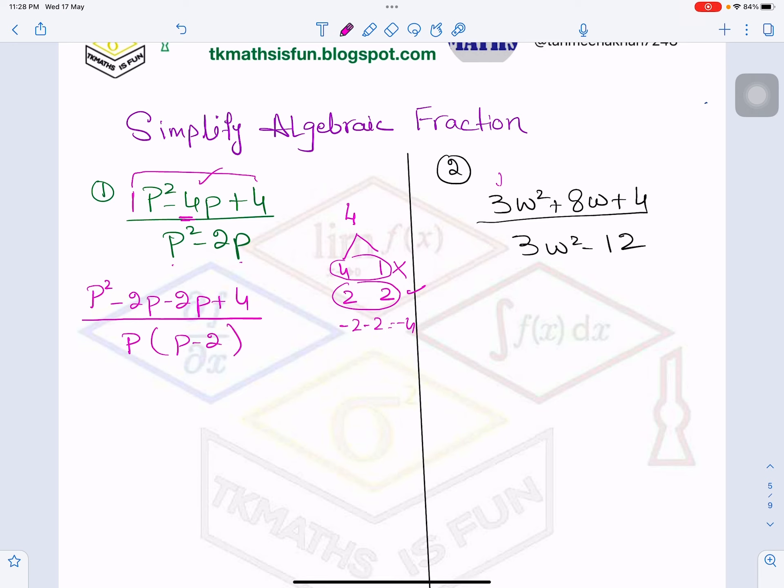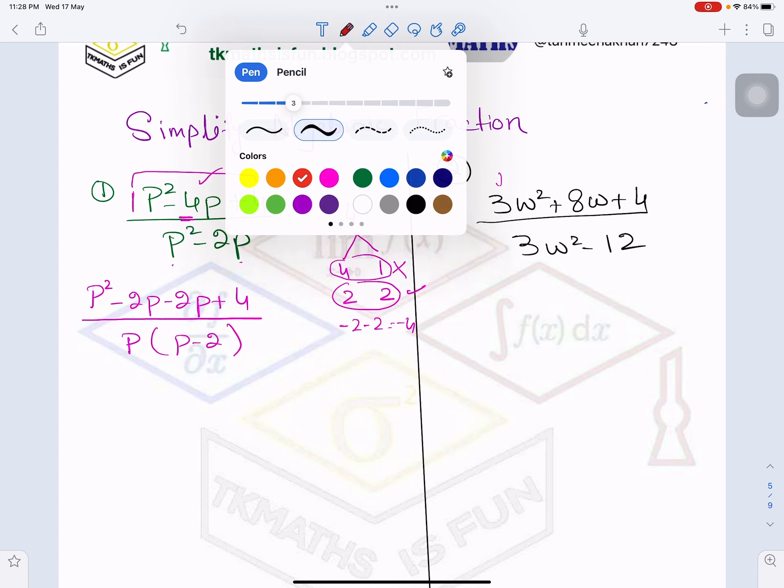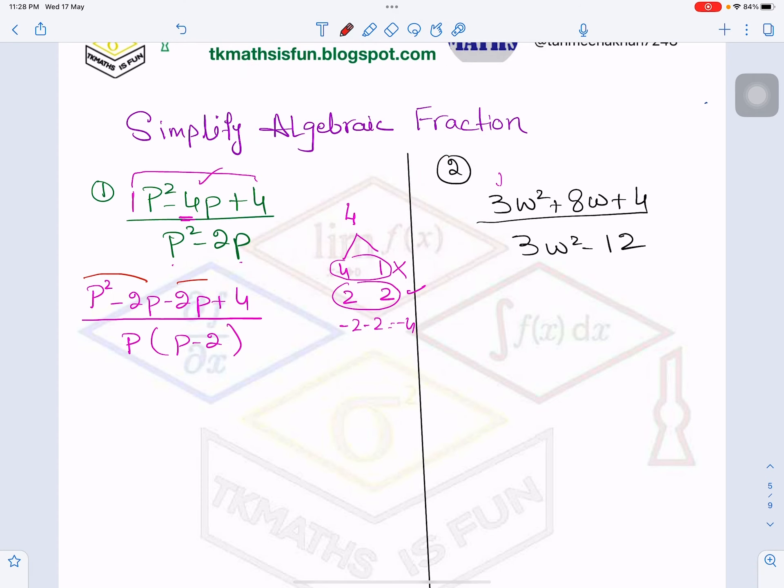From the numerator now, I will take the common from here and common from here. So first of all it will be P(P-2). I have taken from these two terms. Now this minus 2 I will write as it is, because 4 is 2 times 2, so common is 2. Now the mistake students usually make: they write this sign as it is here, whereas you will multiply this sign by this sign to see what to write here. So minus multiply by plus is minus.